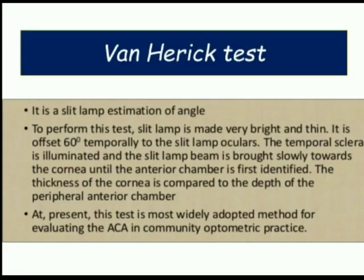The Van Herrick technique has become the most commonly used assessment of the anterior chamber angle, whereby it involves comparison of the depth of the peripheral anterior chamber to the thickness of the cornea when a narrow beam of light is shown at a 60-degree angle. It can be argued that it is preferred by many optometrists in primary care owing to its speed and simplicity.